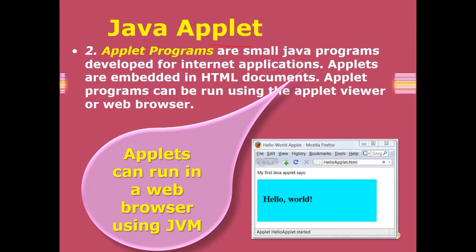Unlike standalone applications, an applet needs a browser to run. It is an internet application. Java applets are embedded in an HTML document and need that HTML document to run in the browser. An applet program can be run using the applet viewer or a web browser.